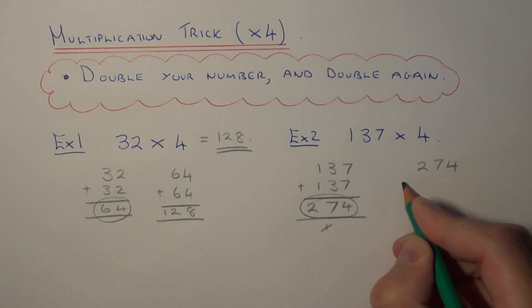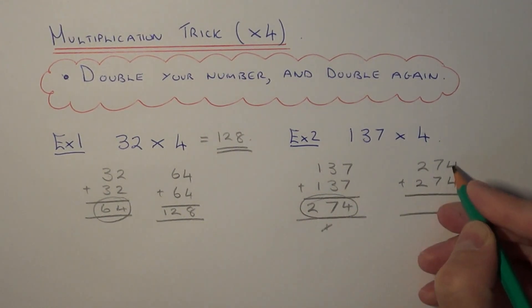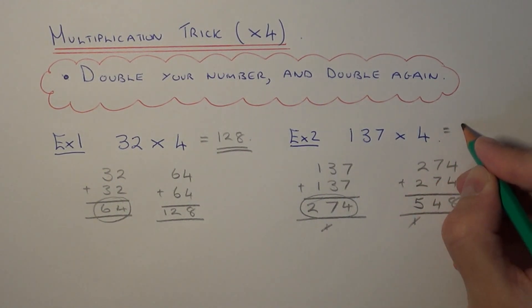So we need to do 274 add 274. So 4 add 4 is 8, 7 add 7 is 14, 2 add 2 is 4 plus the 1 underneath is 5. So our final answer is 548.